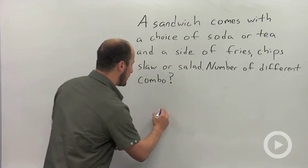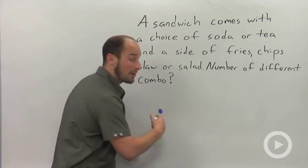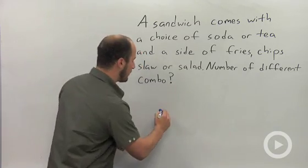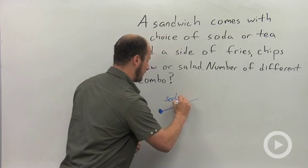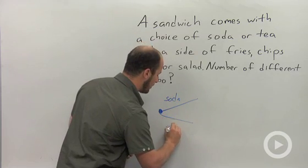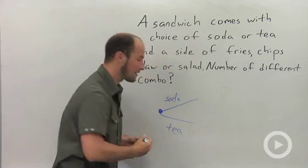So what we end up with is we start with our sandwich. We start at one point. From there, we can either get our soda or our tea. So that takes us through one decision that we have to make.